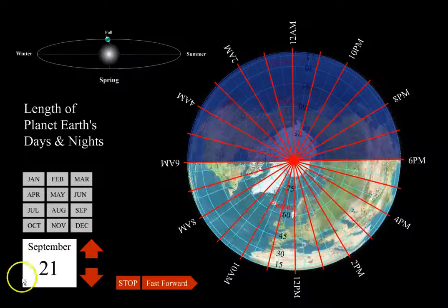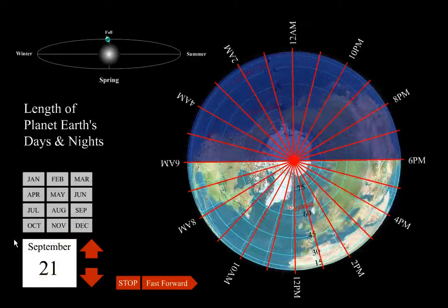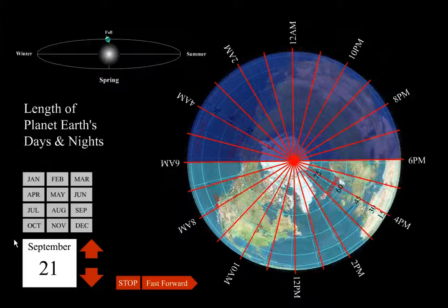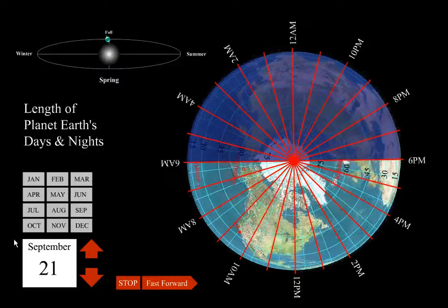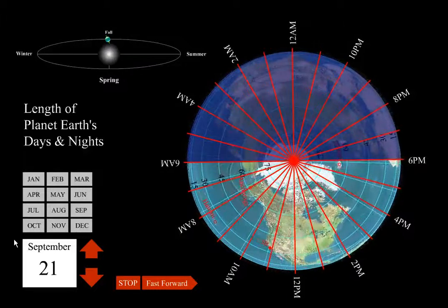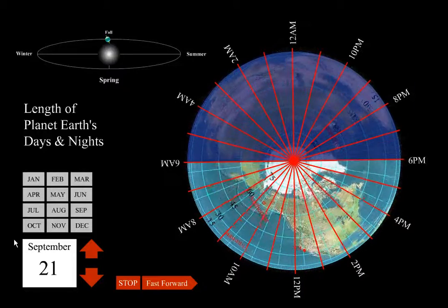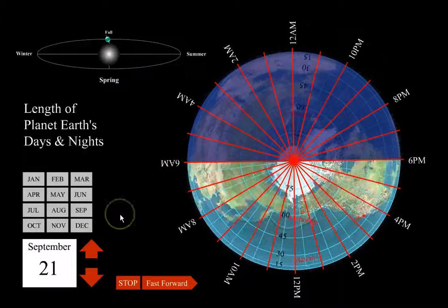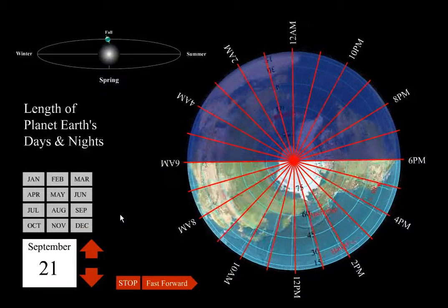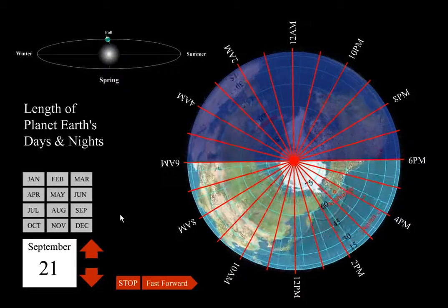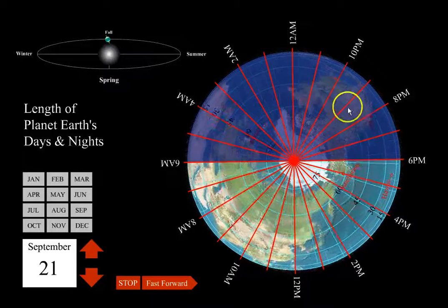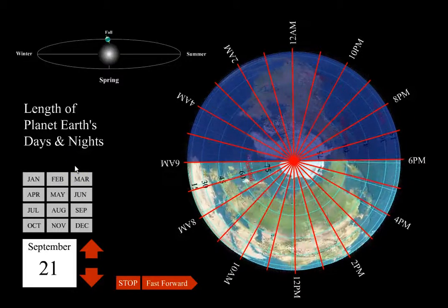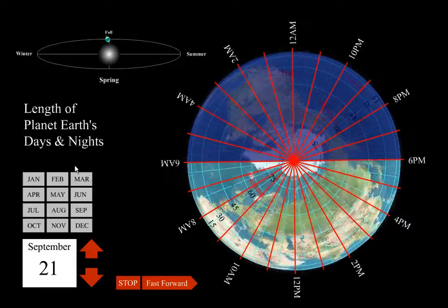We're starting on the equinox — the fall equinox — which is always around September 21st, sometimes the 22nd or even the 23rd. On the equinox we can see why it's called the equinox: all over the earth there is equal hours of day and night. Think of it like a black and white cookie, with the lit part being vanilla and the dark part being chocolate — there's a 50-50 split of daylight and darkness over the entire globe.